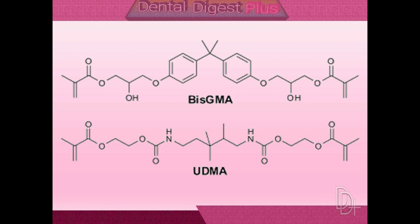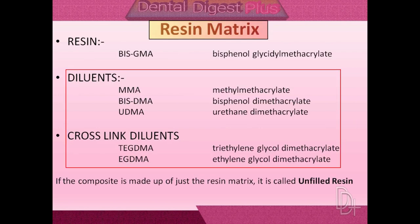The use of a dimethacrylate also results in extensive cross-linking, which increases the strength and rigidity of the polymer. BisGMA resin is the base for composite. In the late 1950s, Bowen mixed bisphenol A and glycidyl methacrylate, thinned with triethylene glycol dimethacrylate, to form the first BisGMA resin. Diluents are added to increase flow and handling characteristics, or provide cross-linking for improved strength.